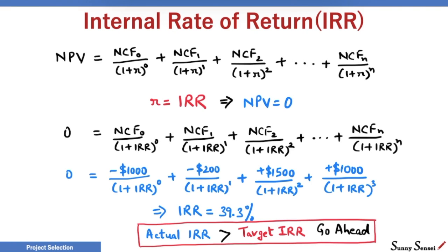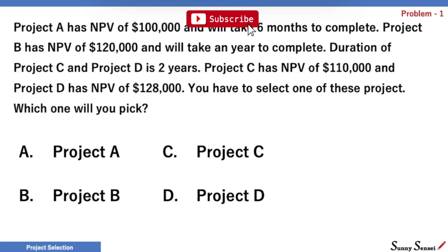Next, let us try a few problems. This is our first problem. Project A has NPV of $100K and will take 6 months to complete. Project B has NPV of $120K and will take a year to complete. Duration of project C and project D is 2 years. Project C has NPV of $110K and project D has NPV of $128K. You have to select one of these projects. Which one will you pick?